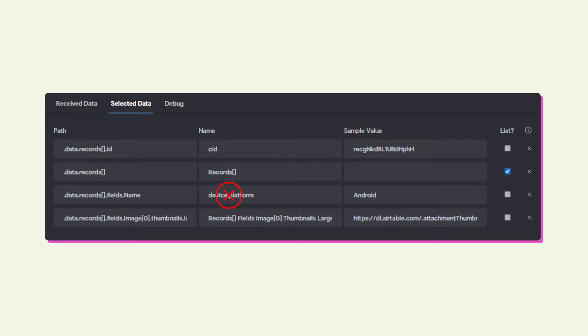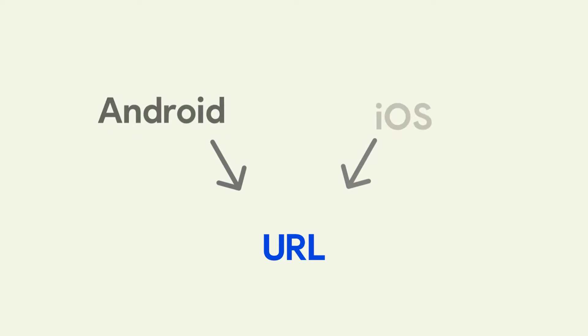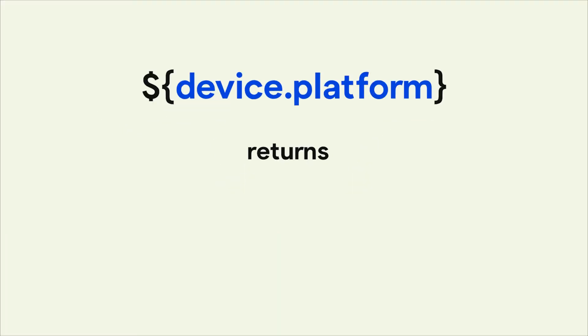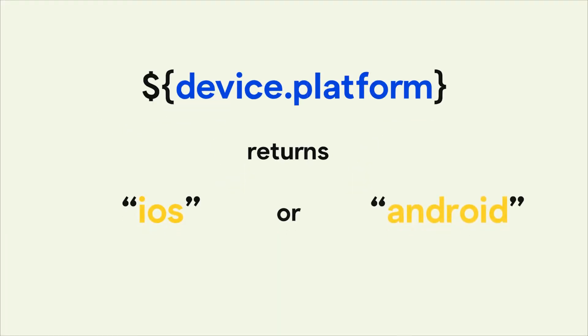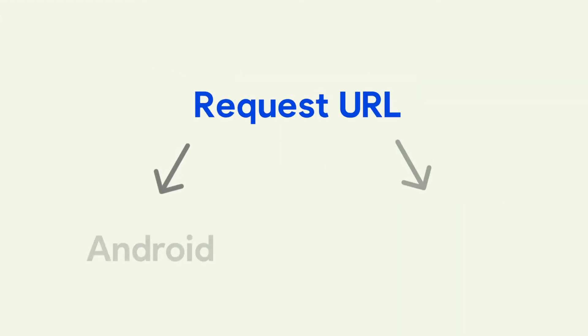Device.platform is one of the variables that are built into Bravo and can be used out of the box. The value is automatically set by Bravo and you cannot set it yourself. It allows you to modify URLs according to the platform the user is currently on, returning either iOS or Android. Knowing this, you can base the response of a URL off of the platform.